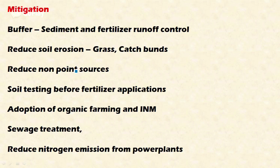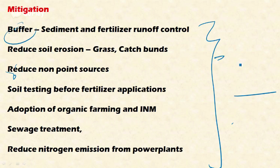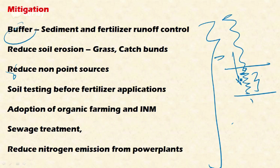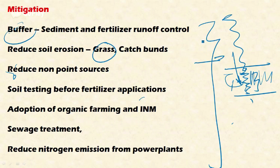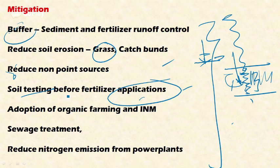Eutrophication can be mitigated in several ways. One important method is creating a buffer between the water body and the source of nutrients — for example, by growing grasses or constructing checkpoints — which restricts the movement of nutrients into the water body. Reducing soil erosion through grass growth and contour farming also reduces leaching of nutrients into nearby water bodies. Additionally, soil testing should be done before applying fertilizers so that they are applied based on soil requirement rather than blindly.